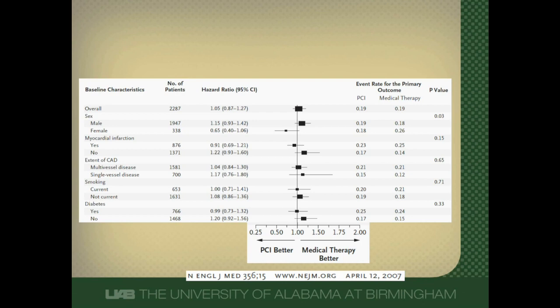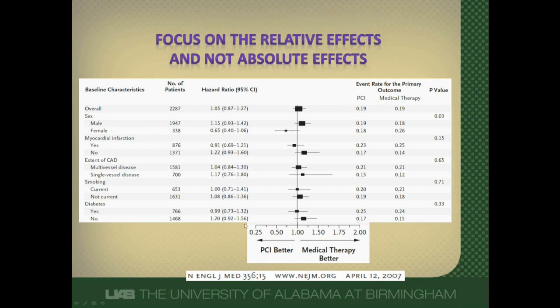So what do you think? Is there a subgroup effect? Well, there are two ways we could try to figure this out. We could look at individual event rates or absolute event rates, or we could look at relative event rates. It's actually recommended that you focus on relative effects and not absolute effects. When you interpret the primary results of a study we recommend you look at absolute effects, but in this case you want to look at relative effects, and the reason is that relative effects tend to be consistent across subgroups.